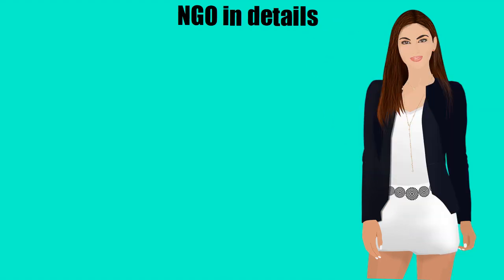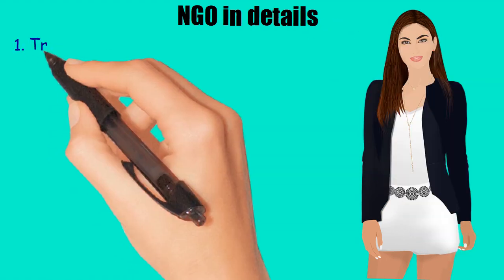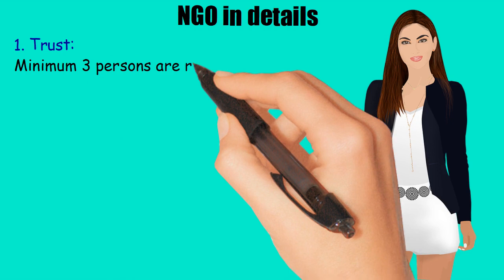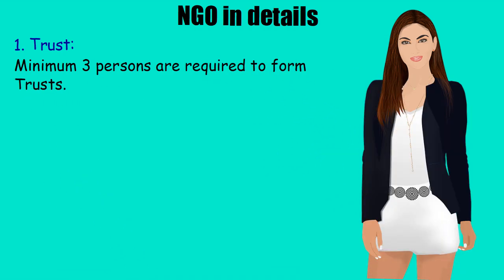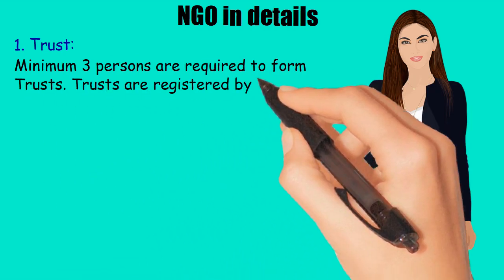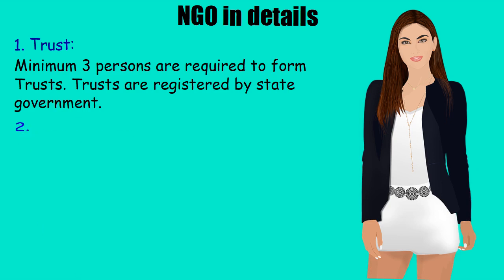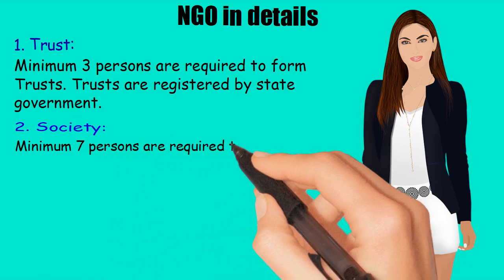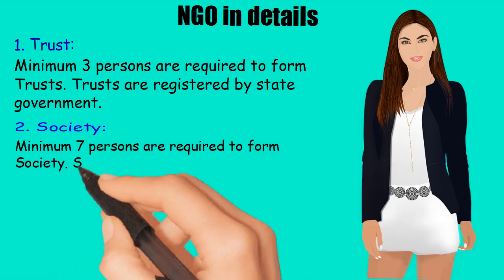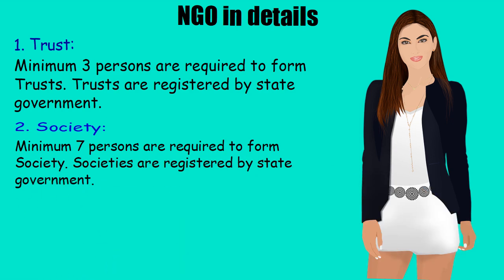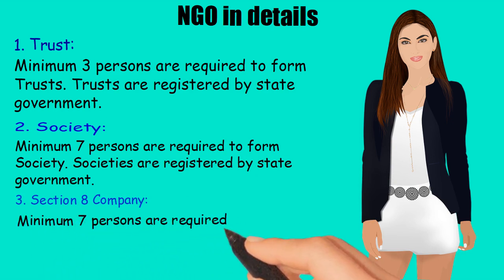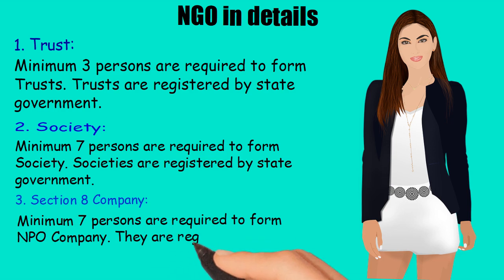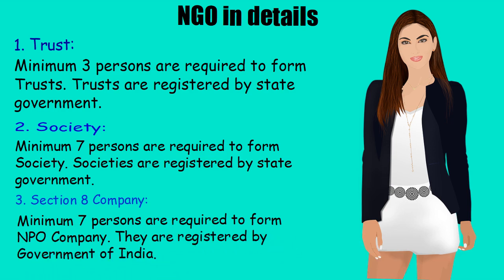NGO in detail. 1. Trusts: Minimum 3 persons are required to form a Trust. Trusts are registered by the state government. 2. Society: Minimum 7 persons are required to form a Society. Societies are registered by the state government. 3. Section 8 Company: Minimum 7 persons are required to form an NPO Company. They are registered by the Government of India.